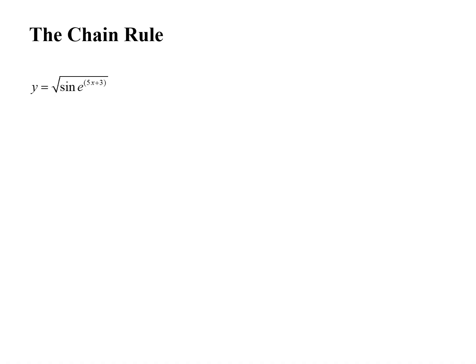Hello, my name is Joe Vasta, and today we're going to go over the chain rule. We have a function that says y equals square root of sine of e raised to the 5x plus 3 power, and we're going to write that square root as the 1 half power. We'll also put parentheses around the argument of the sine.